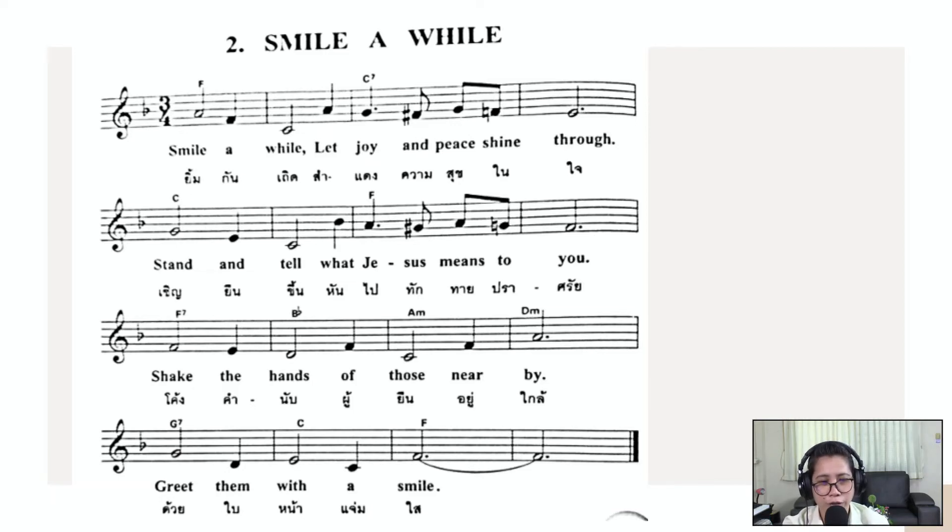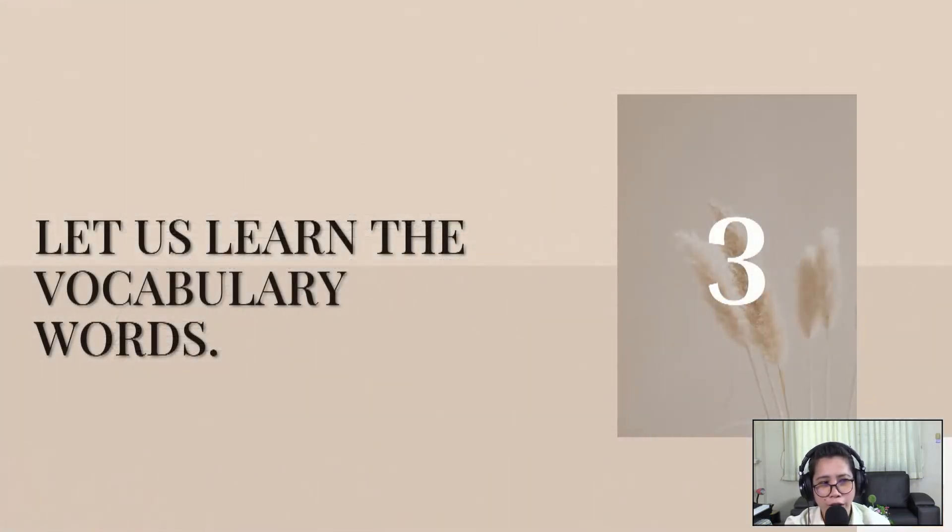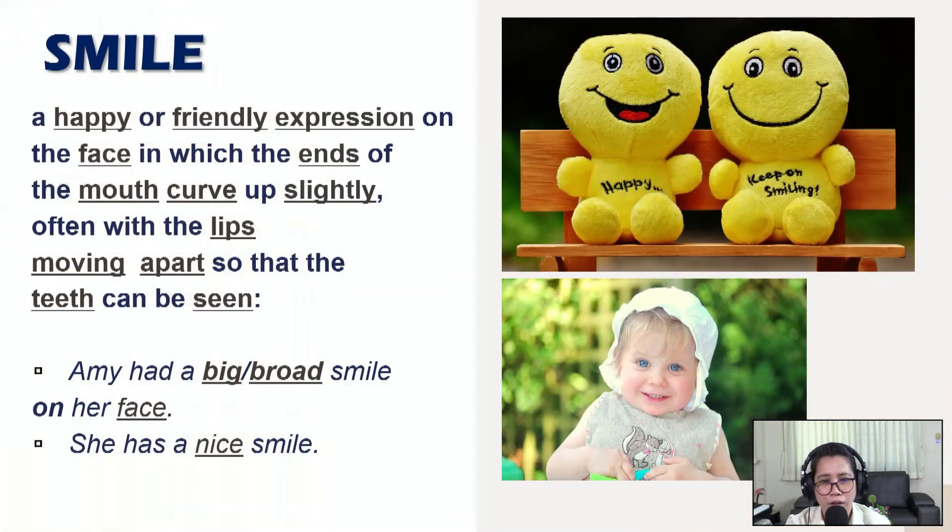Thank you for singing with us year three. Now let us learn the vocabulary words. We have here smile. Smile. It's a happy or friendly expression on the face in which the ends of the mouth curve up slightly and often with the lips moving apart so that the teeth can be seen. As you can see this baby, she's smiling. Examples are Amy had a big broad smile on her face. She has a nice smile.